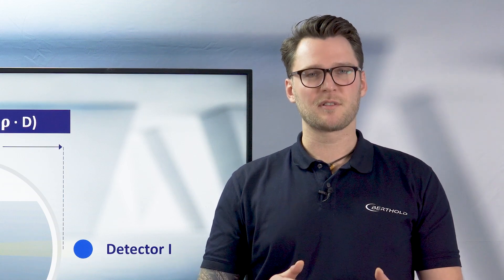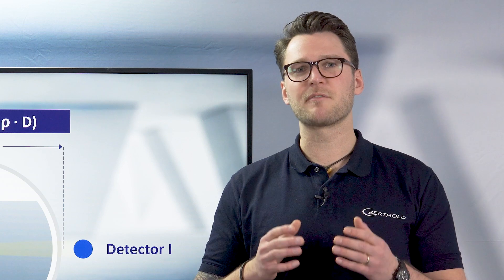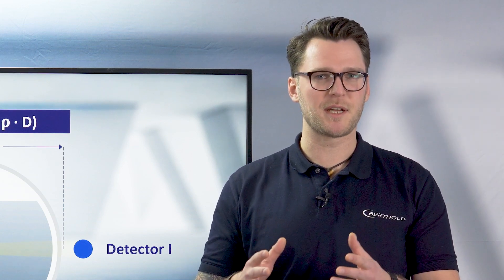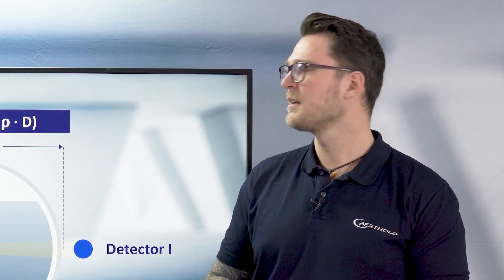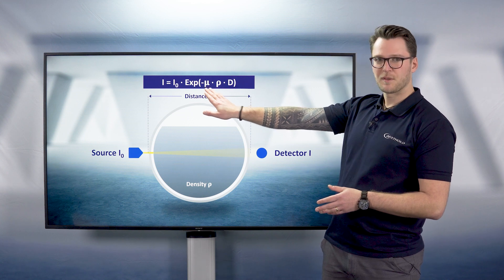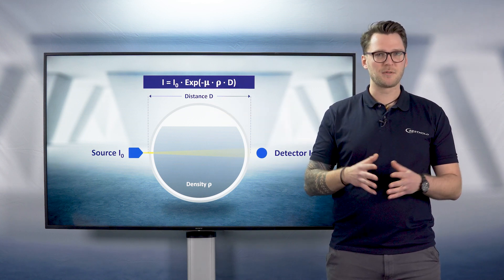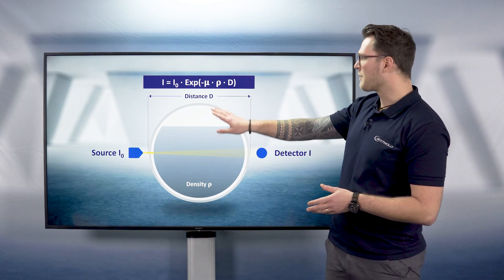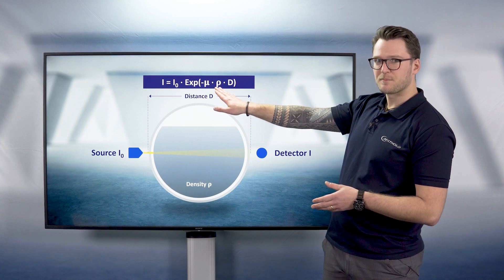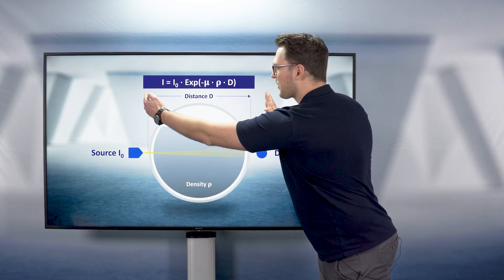By looking closer on the formula of attenuation, it becomes visible that mainly three parameters are affecting the amount of the remaining radiation measured on the detector. The first parameter is the attenuation coefficient µ, which is basically dependent on the energy of the radiation used. The second parameter is the density of the material rho, and the third parameter is the distance between the source and the detector.